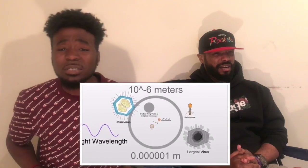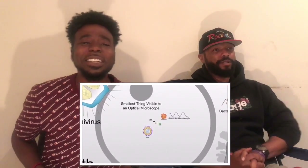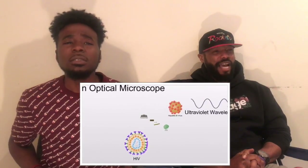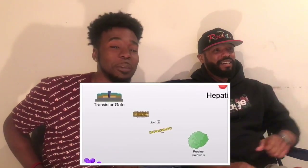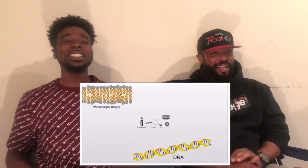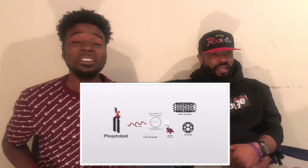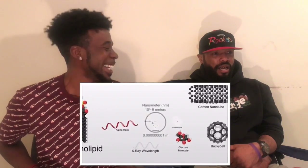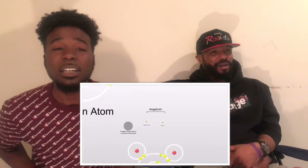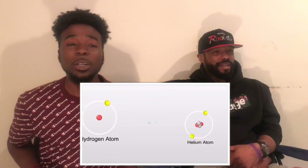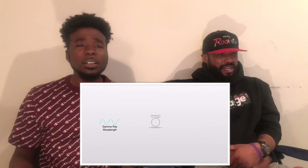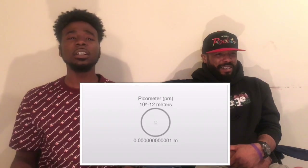Micrometer. Jesus — smallest thing visible to an optical microscope. Ultraviolet wavelength. HIV — what the fuck? DNA. Hold on, are we getting smaller than DNA? HIV is bigger than DNA? Carbon atom, water molecule — angstrom. Hydrogen atom, helium atom — damn.